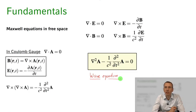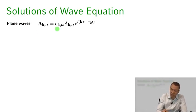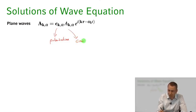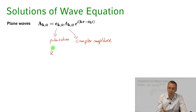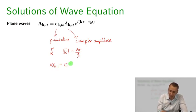The solutions of this wave equation can be written as plane waves. Each plane wave has a polarization vector for wave vector k and polarization component alpha, a complex amplitude describing the strength and phase of the excitation, and a wave vector k with norm 2π over lambda. The frequency is omega_k equals ck in free space.